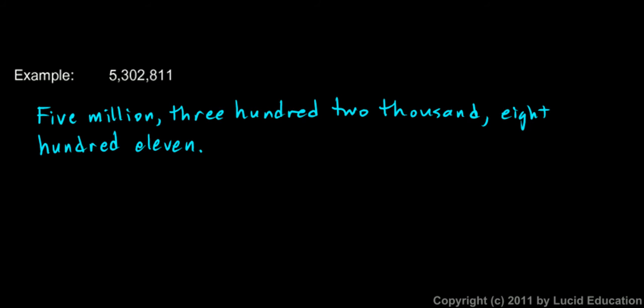Now, a couple of things to note. I didn't use the word and. Some people would say something like 302 thousand and 811. And it's still pretty clear what you mean. But to just be exactly correct, if you want to really get this right, you don't use the word and in there. We'll use the word and in a different way later on. So write these without the word and.